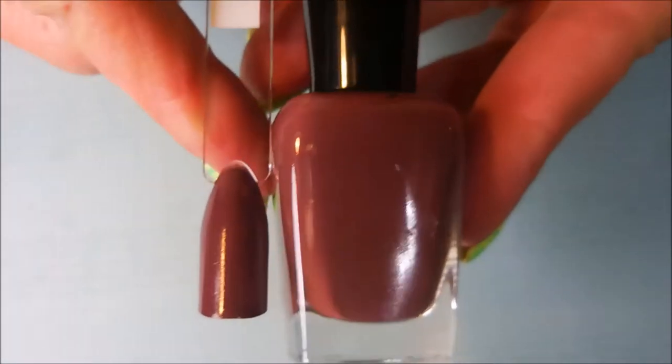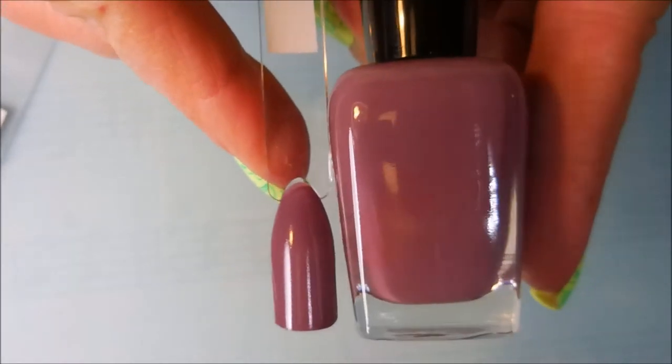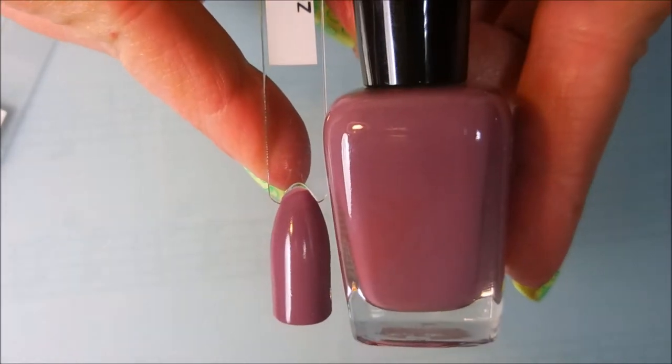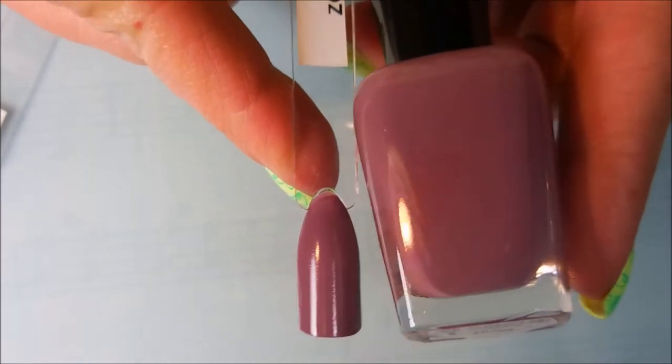And next we have Marnie, turn the bottle around, Marnie. And here we go, the last one, and this is Odette. And I really do like this dusty purple, I'm just really really in love with this one.